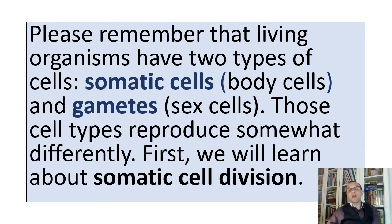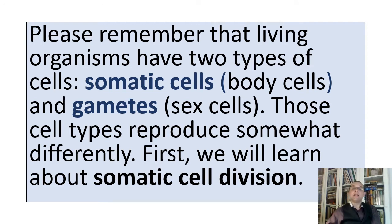Please remember that living organisms have two types of cells: somatic cells, or body cells — soma means body — and gamete cells, or sex cells. Those cell types reproduce somewhat differently. First, we will learn about somatic cell division.